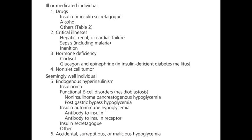Causes of hypoglycemia: first, maybe because of drug or insulin use, or sometimes in critical illness - patients with diabetes mellitus in critical illness like hepatic, renal, or cardiac failure, or sepsis, or after surgery - may also develop hypoglycemia. Or sometimes due to contra-insular hormone deficiency, like deficiency of cortisol, deficiency of glucagon hormones, or epinephrine and norepinephrine hormones, can also result in hypoglycemia. Because of hyperinsulinism, also hypoglycemia can develop due to over-production of insulin by a tumor.